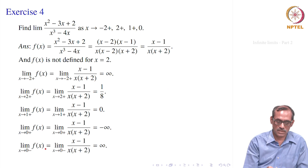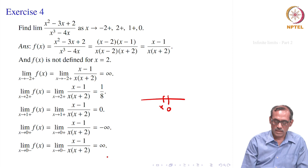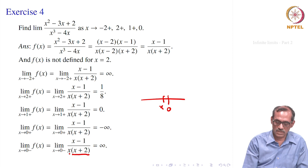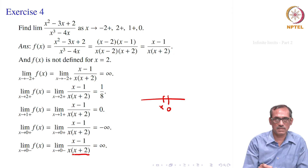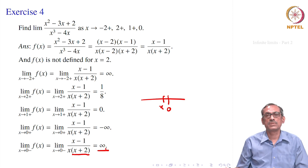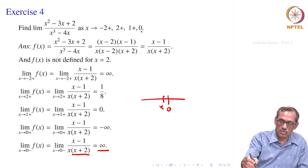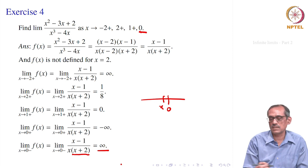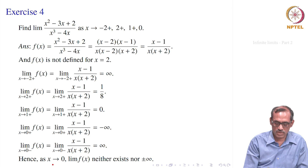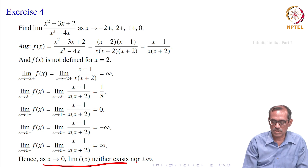For x → 0-, x is negative and near 0. Then x - 1 is negative, x is negative, x + 2 is positive. The denominator is negative and near 0, the numerator is near -1. Negative divided by negative gives positive, and the magnitude diverges, so the limit is +∞. Therefore as x → 0 the limit is neither +∞ nor -∞ and does not exist.